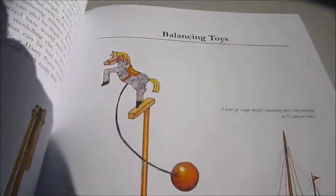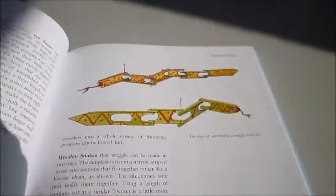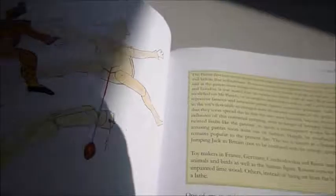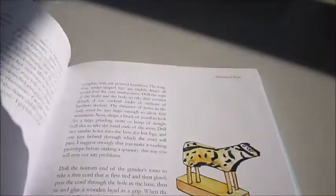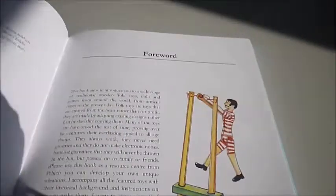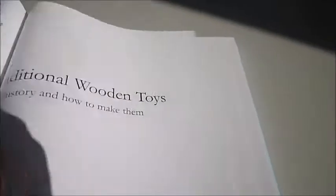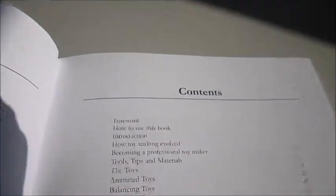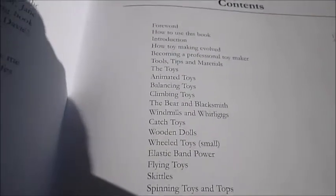There are toys that amaze and puzzle, animated balancing, climbing and spinning, wheeled, elastic banded, whistles, rattles and noisemakers, optical, flying, catching, dolls, puppets, and even a voice-operated wooden toy. That's the sections.